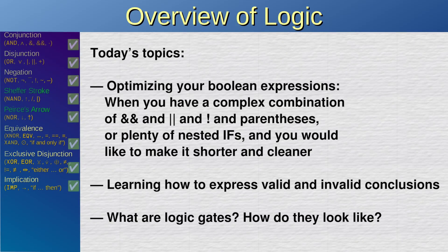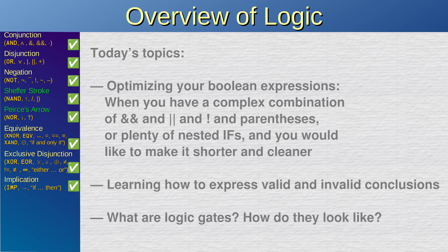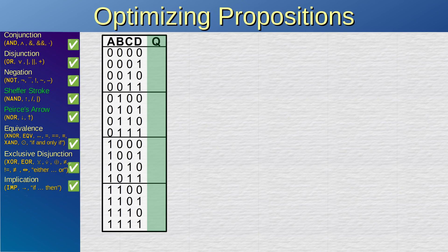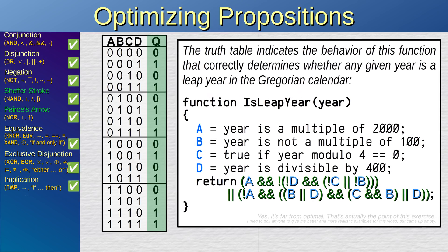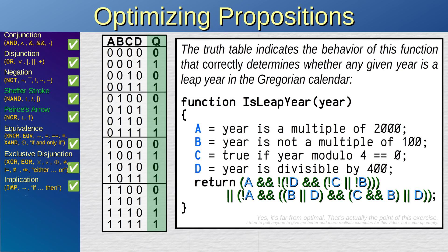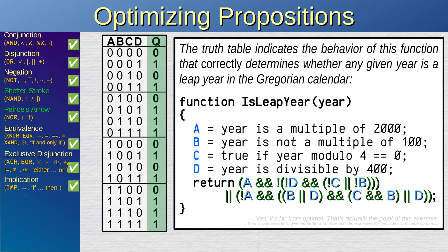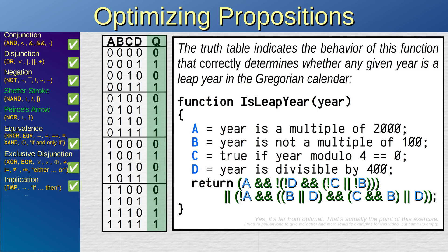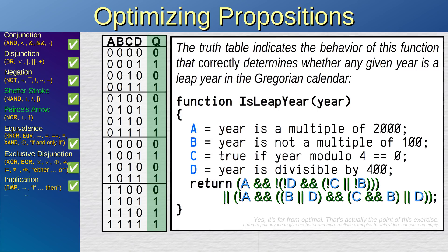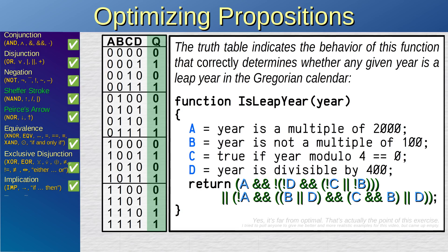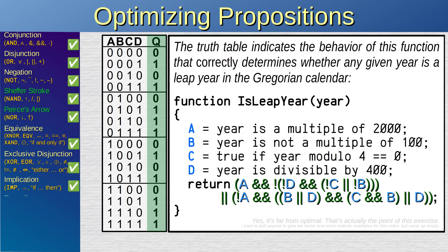So far, we have discussed only cases with at most two variables. In reality, logical expressions may have many inputs. Suppose that we have this 4-input truth table, where for every combination of inputs a, b, c and d, we have figured out the intended outcome q. The naive approach would be to go through every line that has true for the result, and analyze what expression is responsible for that true value.